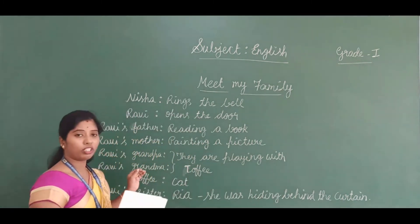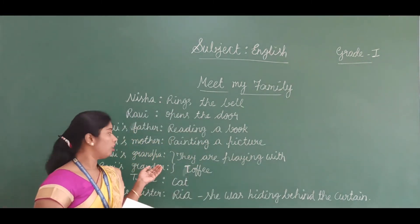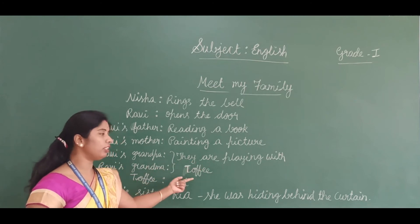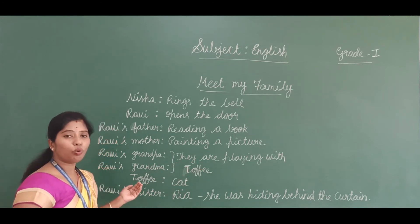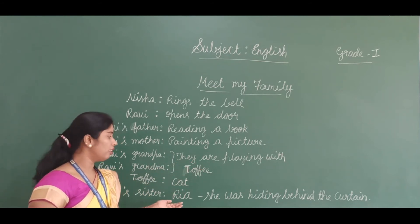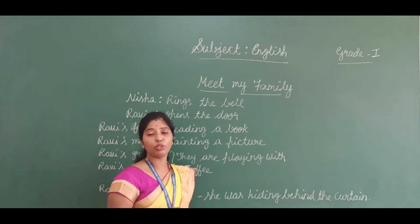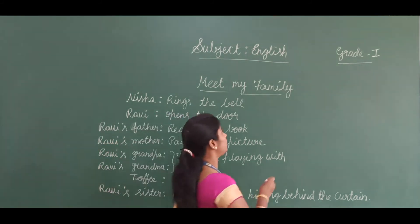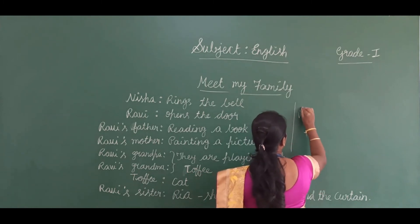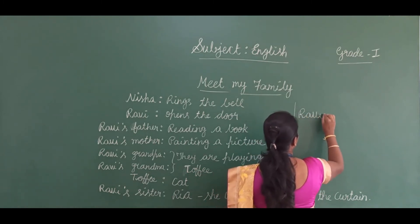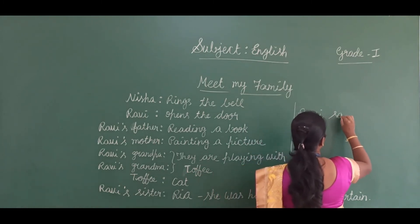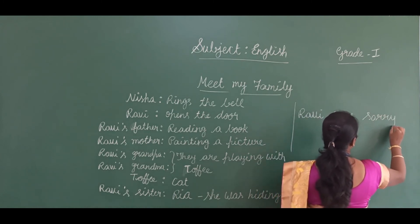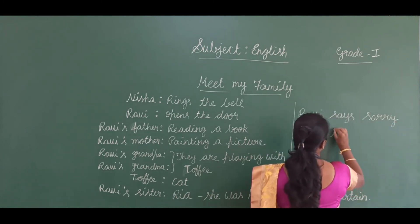Now tell me — with whom are the grandparents playing? The grandparents are playing with Toffee, the cat. Who is hiding behind the curtain? Riya. Who says sorry? Ravi says sorry to Nisha.